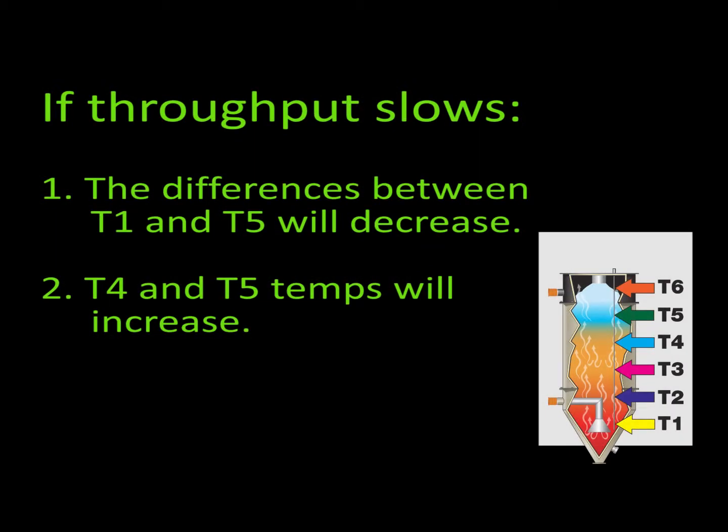If material flow through the drying hopper is slowed down, the difference in temperature readings between T1 and T5 will steadily decrease. T4 and T5 will gradually rise towards the T1 temperature, since the slower moving material will absorb more of the drying heat.